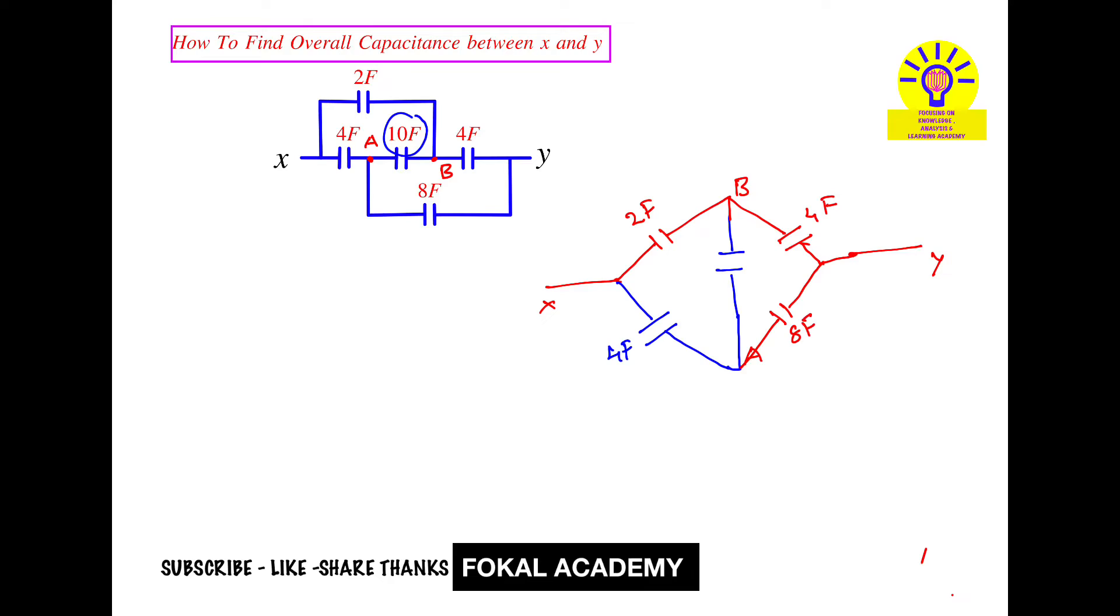Now it is a Wheatstone bridge. So in the middle, we have 10 Faraday capacitor. So let's consider this is C1 capacitor and this is C2 capacitor and this is C3 capacitor and this is C4 capacitor.